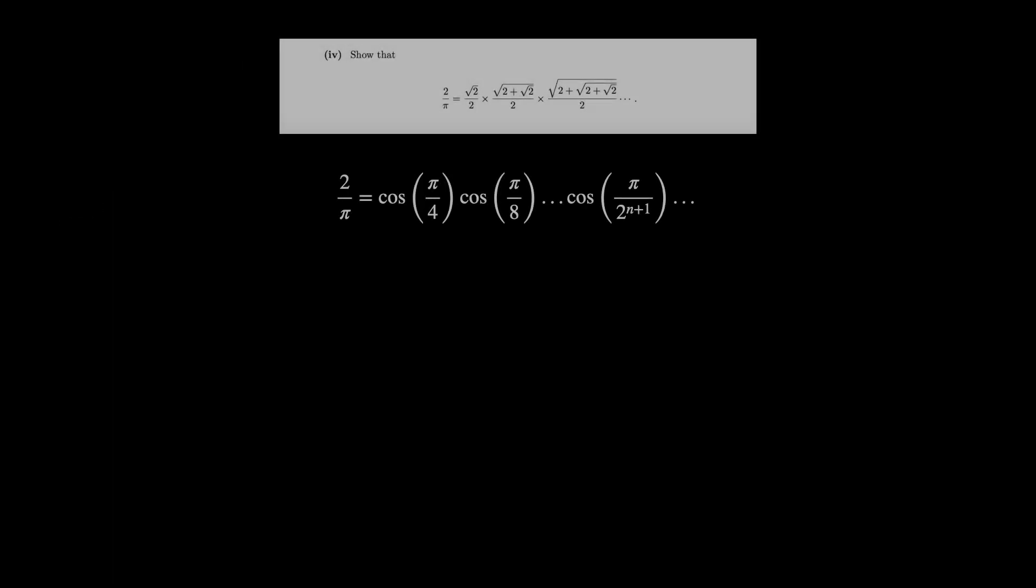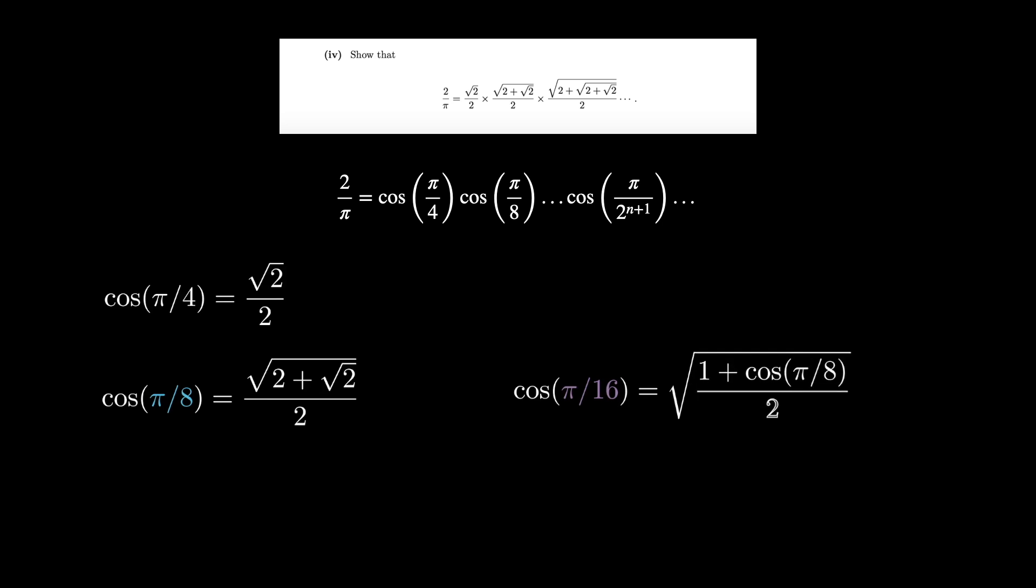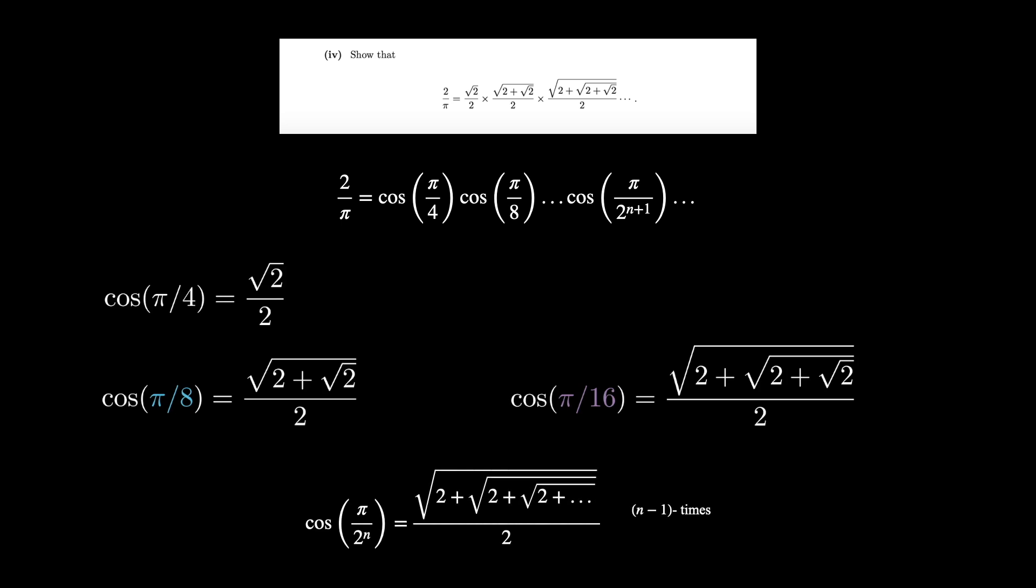Or more generally, by repeating the process, we obtain a nested expression for pi over k, with k being any power of 2. What is left is plugging this back to the initial expression, and we get the answer.